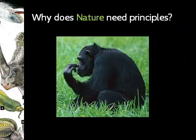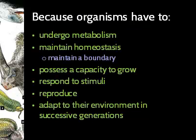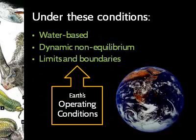That begs the next question: why does nature need principles at all? Doesn't it just live? As we learned earlier, organisms have to do all these things in order to be considered alive and not either dead or inanimate. Organisms have to undergo metabolism, maintain homeostasis, possess a capacity to grow, be able to respond to stimuli, be able to reproduce, and be able to adapt to their environments in successive generations. All 30 million or so different species out there have to do those things.